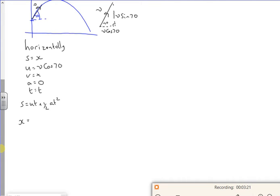So if I use S equals UT plus a half AT squared. So X, the A is 0, isn't it? So this part here just disappears. So X is equal to V cos 70 times T. That makes sense if that was the one that I'm going to rearrange. Let's have a look vertically.